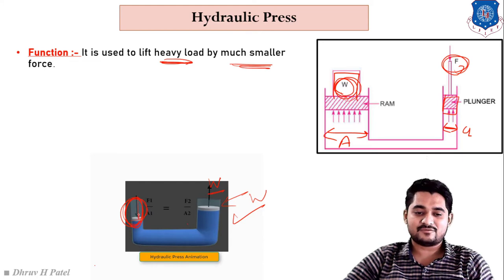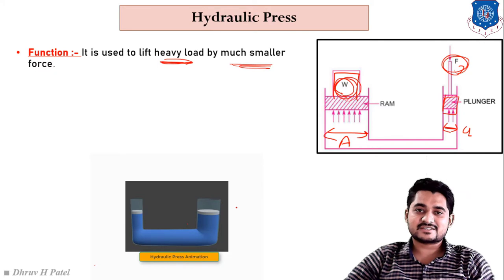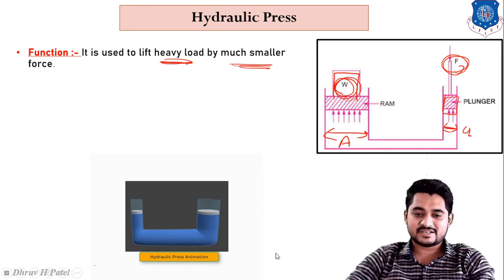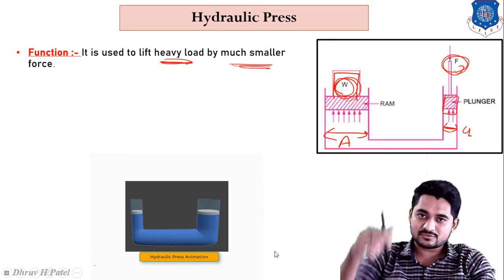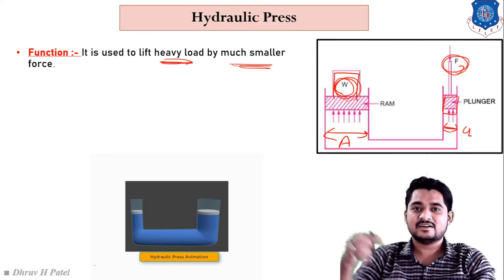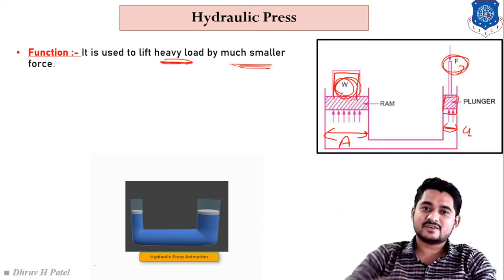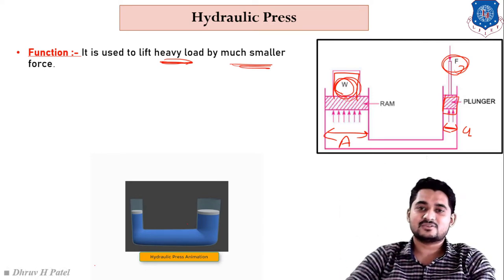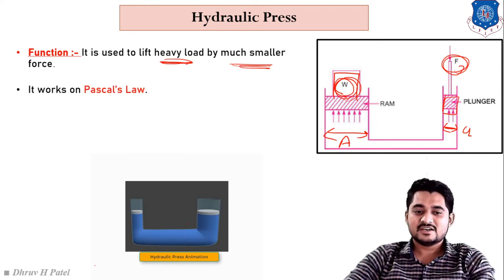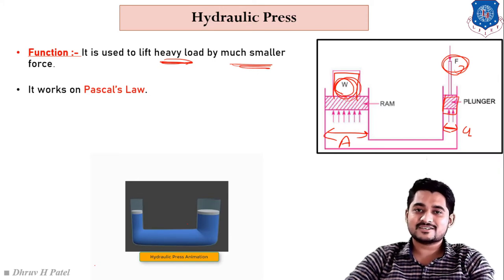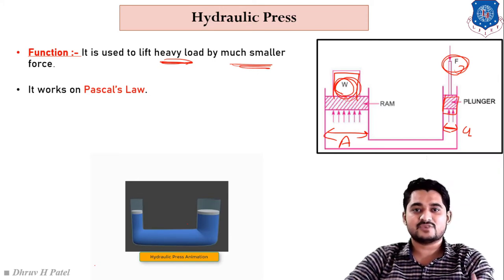From the much smaller force F1, we can raise a much higher weight W. If we apply F1, W moves in the upward direction. We can understand Pascal's law from this hydraulic press: if we apply a smaller force on the small cross-sectional area, we get a much higher force on the larger cross-sectional area.